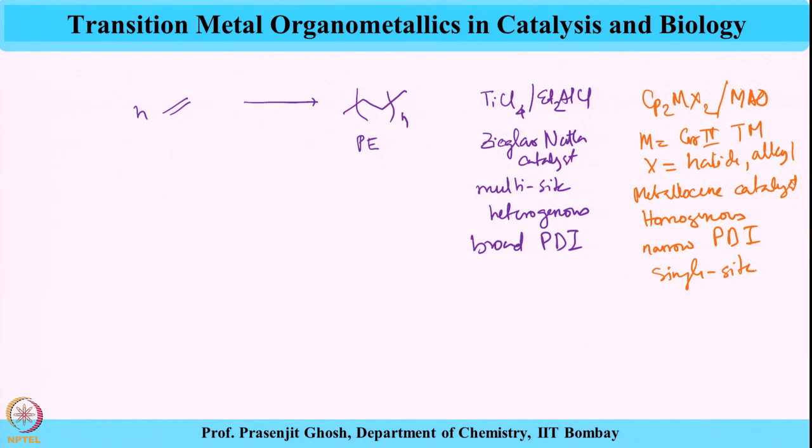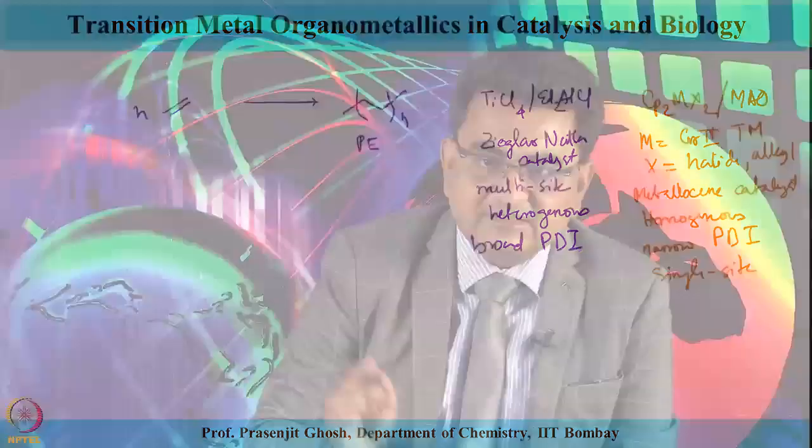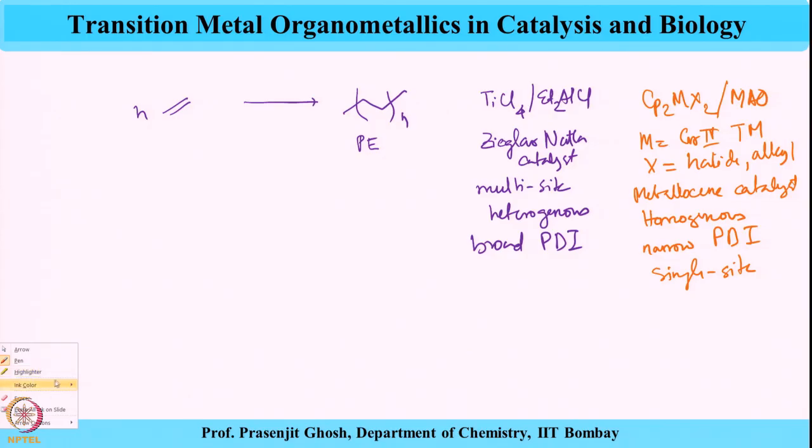So these are the two types of catalysts: one is heterogeneous (Ziegler-Natta) and one is homogeneous (metallocene). The metallocene provides narrow PDI polymer whereas the heterogeneous catalyst provides broad PDI polymer. Additionally, metallocene catalysts are single-site catalysts with high activity, while Ziegler-Natta catalysts show lower activity. Using these two catalysts, we did an elaborate study on polyethylene polymerization.